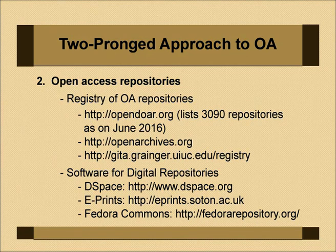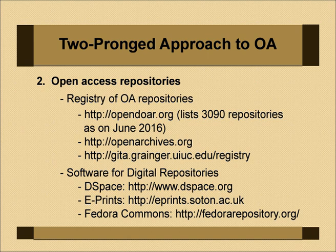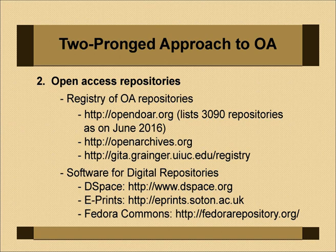One of the best software tools is from the Public Knowledge Project — OJS (Open Journal Systems) — which is used by many open access journals in Sri Lanka, Bangladesh, and India. It has many features for publishing a journal including blind reviewing and double-blind reviewing, and it supports standards and protocols like OAI-PMH for harvesting metadata. For open access repositories, the Registry of Open Access Repositories at opendoar.org lists about 3,000 repositories as of June 2016. Software for digital repositories includes DSpace, EPrints, and Fedora Commons.